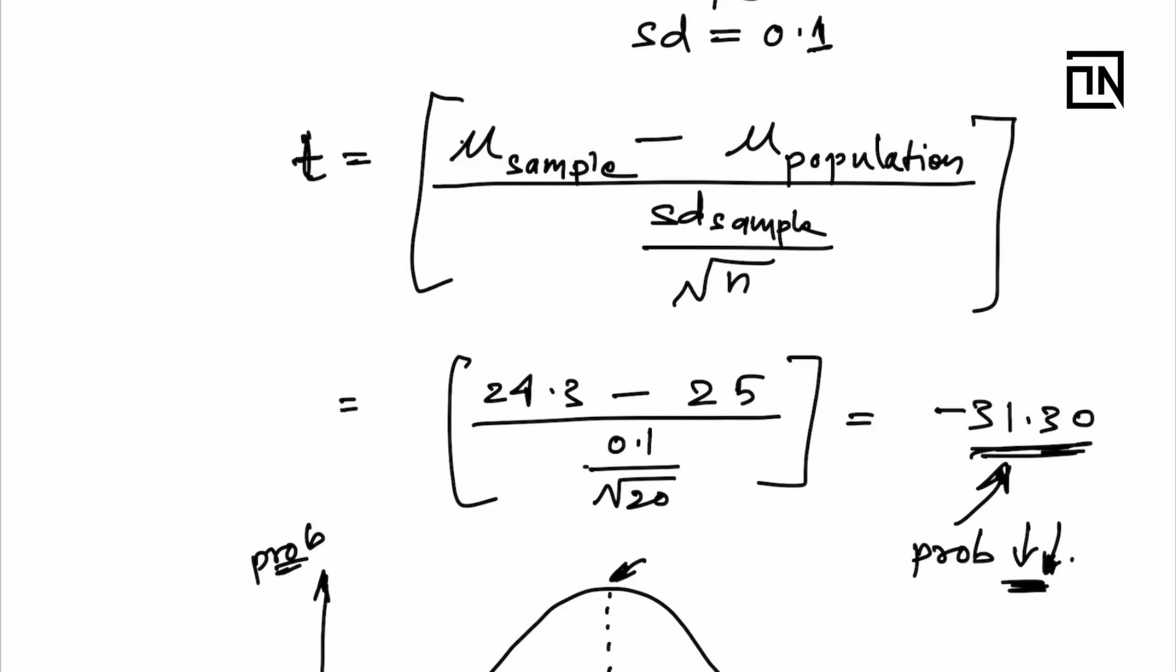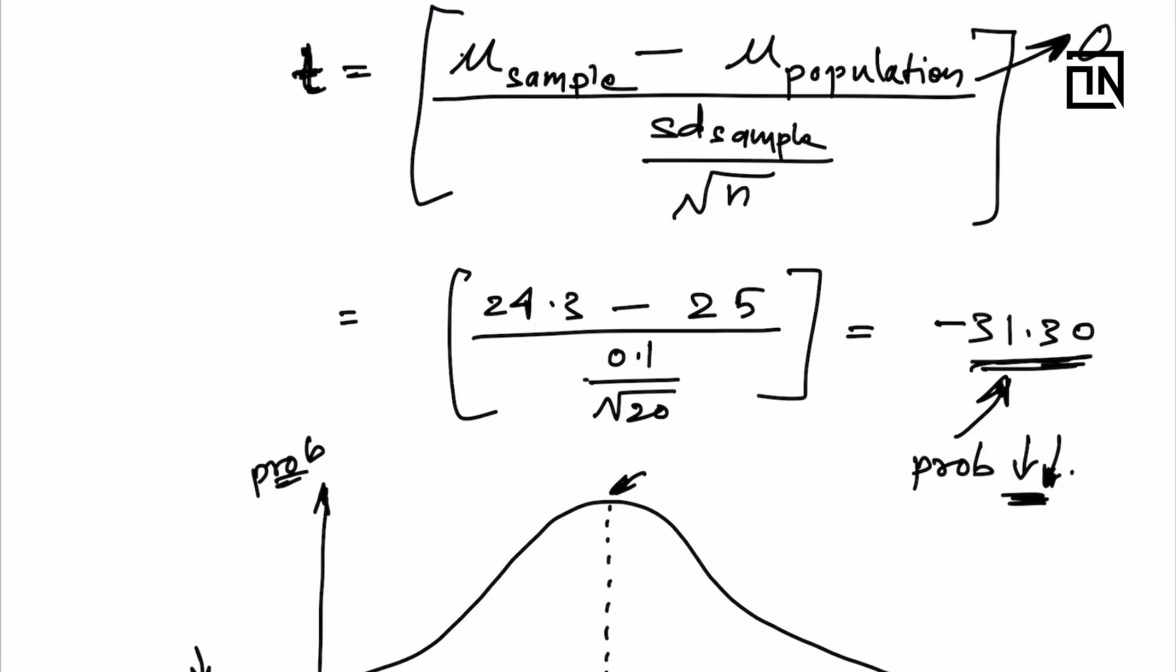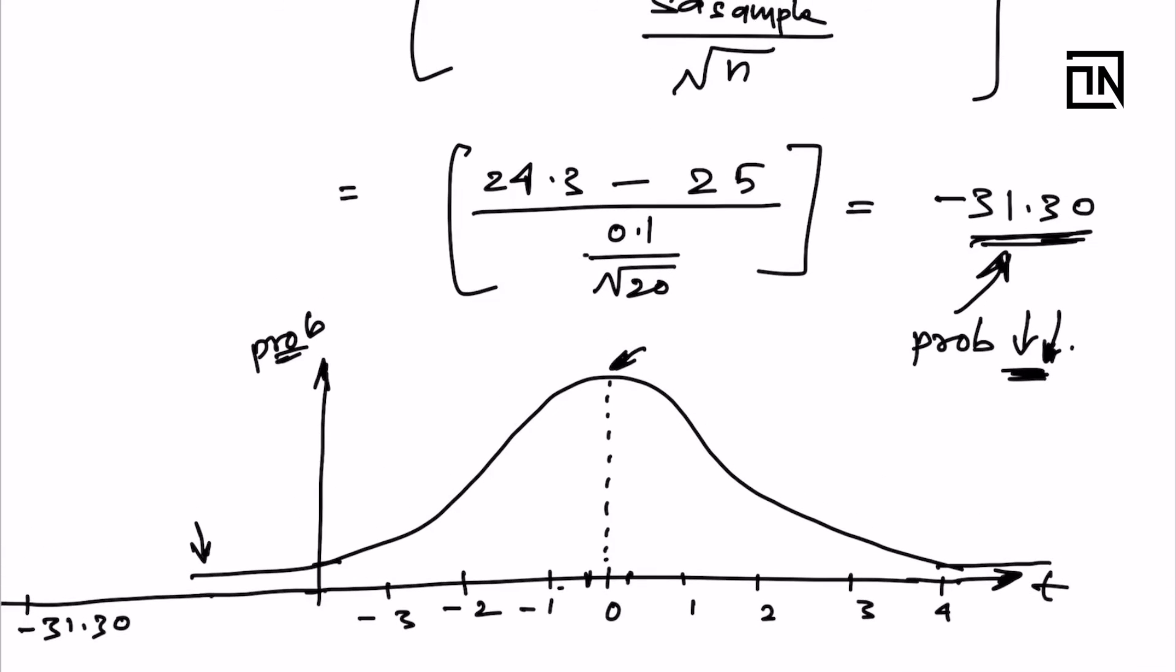This t-value will be equal to 0 when the mean of sample is nearly equal to the mean of population. The numerator will turn out to be near to 0, and your t-value will be centered around 0. If the mean of sample is far away from the mean of population, then the numerator will increase and the t-value will also increase. That's how you will get a low probability of getting such an extreme t-value.